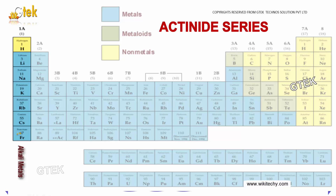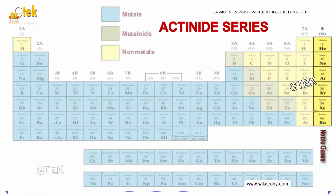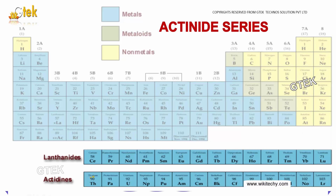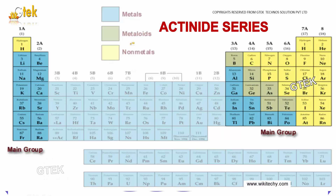This is your alkali metals, alkaline, your noble gases, your halogens, your lanthanides and actinides. The blue color indicates metals, and these two are considered as main groups. Green color indicates metalloids and yellow color indicates non-metals.